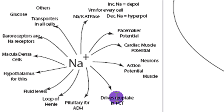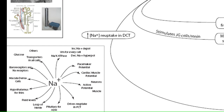Another key thing about sodium is it drives uptake in the proximal convoluted tubule. When we go through the kidney, we talk about how you make 180 liters of filtrate and you need to get that back into the blood system, otherwise you're going to lose it into the urine. The primary way a lot of that gets back in is sodium is pumped from the filtrate into the blood, water follows the sodium, and then other things follow that water. So it all starts with the sodium.